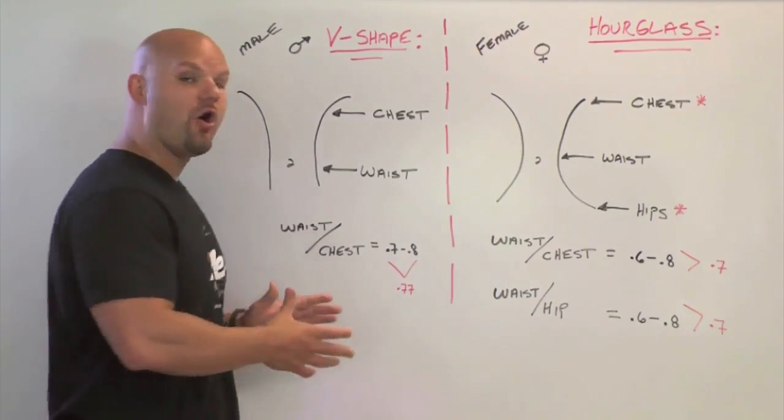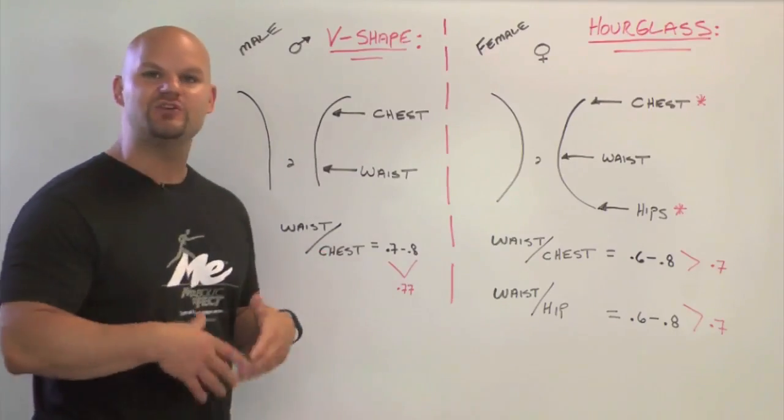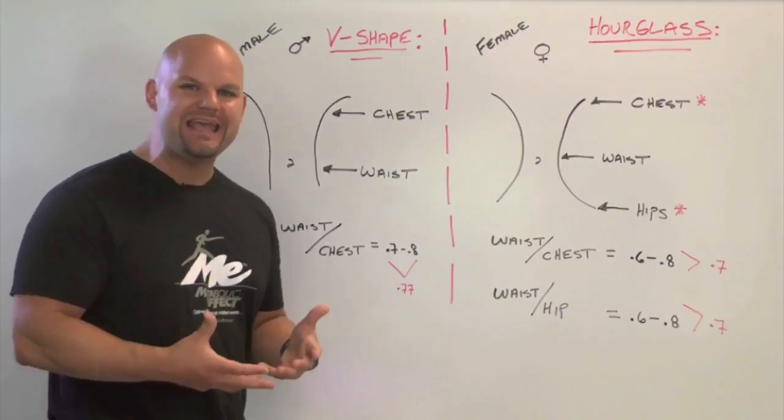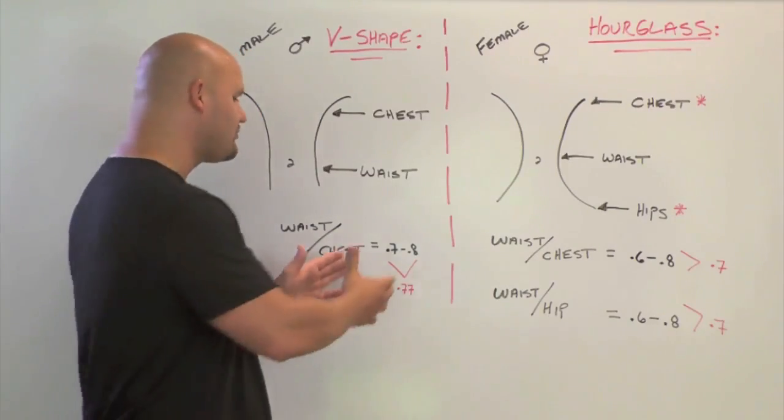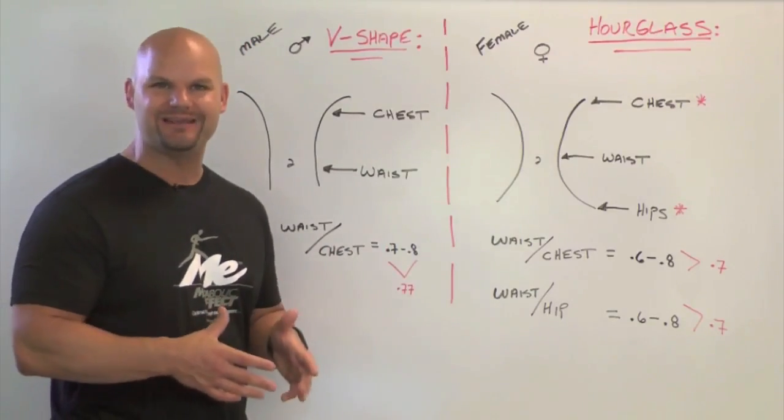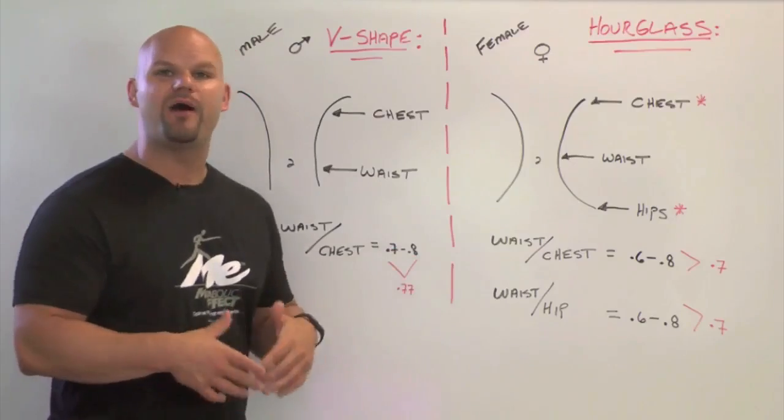We here at Metabolic Effect call this the apple measurement, the apple number, because it tells you if you're an apple shape or a V-shape. The ideal is right around 0.77 based on the research. But really most men should fall between 0.7 and 0.8. The average male in the western world is usually above 0.8.